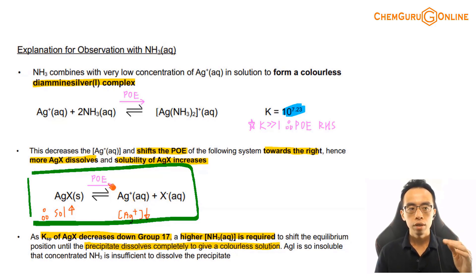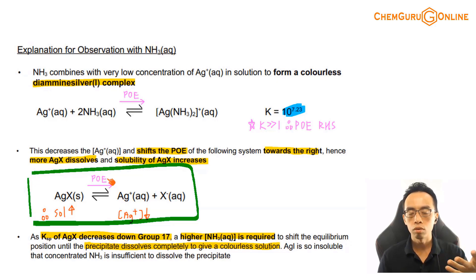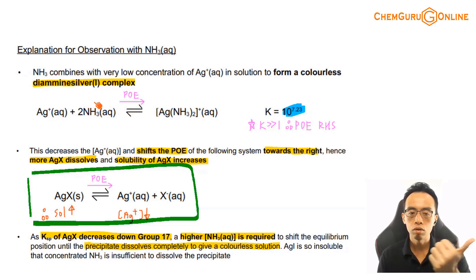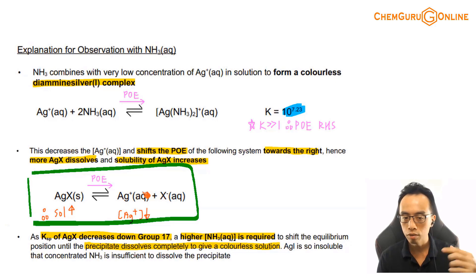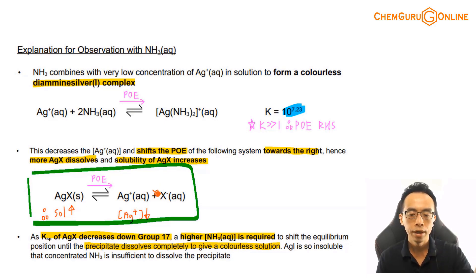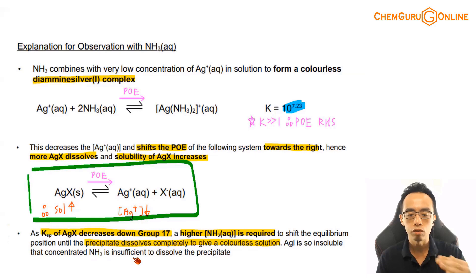For silver bromide, a higher concentration of ammonia is needed. As ammonia concentration increases, the equilibrium shifts further right, Ag⁺ concentration decreases more, and solubility increases further — so concentrated ammonia can dissolve AgBr. For silver iodide, the Ksp value is too low and solubility is very, very low, so even concentrated ammonia is not capable of dissolving the precipitate.